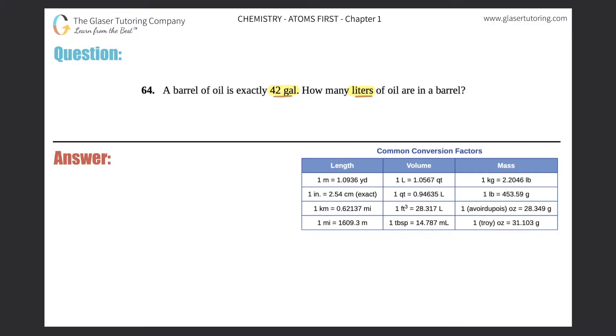Whenever I do a conversion factor question, I like to think of a roadmap. I like to map out my steps just in case there's more than one. So in this case, I want to take 42 gallons and I want to go to liters.